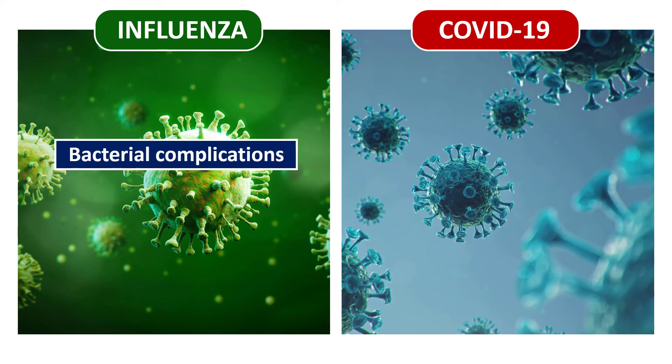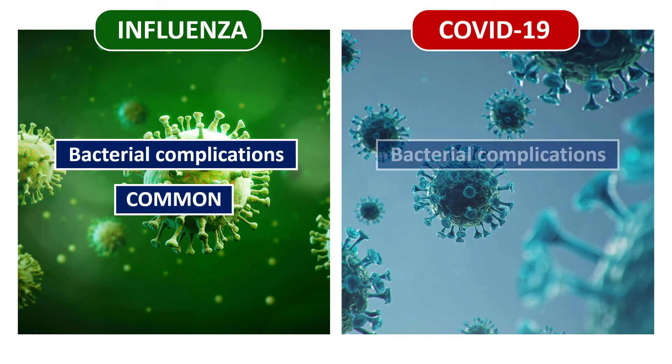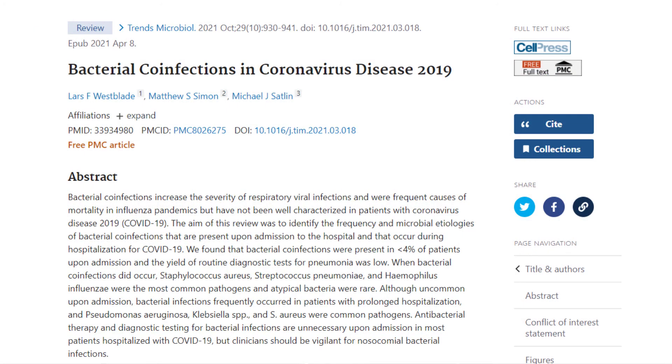You might ask: why go with antibiotics if we know it's primary influenza pneumonia? In influenza, as opposed to COVID, bacterial co-infections and super-infections are very, very common. So when we treat primary influenza pneumonia, we add antibiotics every single time. In COVID-19, co-infections and bacterial super-infections are very rare — only the most severely ill ICU patients are at high risk.